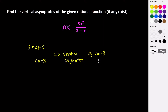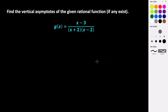So let's look at another example. For this example we are given the function g of x equals the quantity x minus 3 divided by the quantity x plus 2 times x minus 2. Again, vertical asymptotes occur when our denominator is equal to 0. We are looking for domain restrictions.